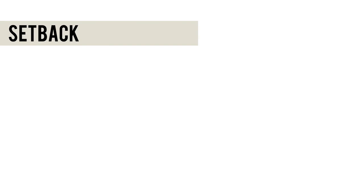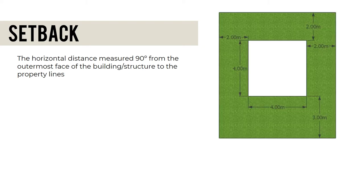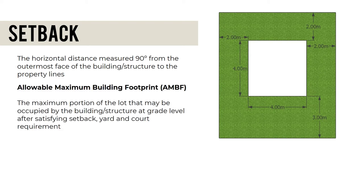Setback is the horizontal distance measured 90 degrees from the outermost face of the building or structure to the property line, represented by the green area in the figure. The Allowable Maximum Building Footprint (AMBF) is the maximum portion of the lot that may be occupied by the building at grade level after satisfying setback, yard, and court requirements, represented by the white area.